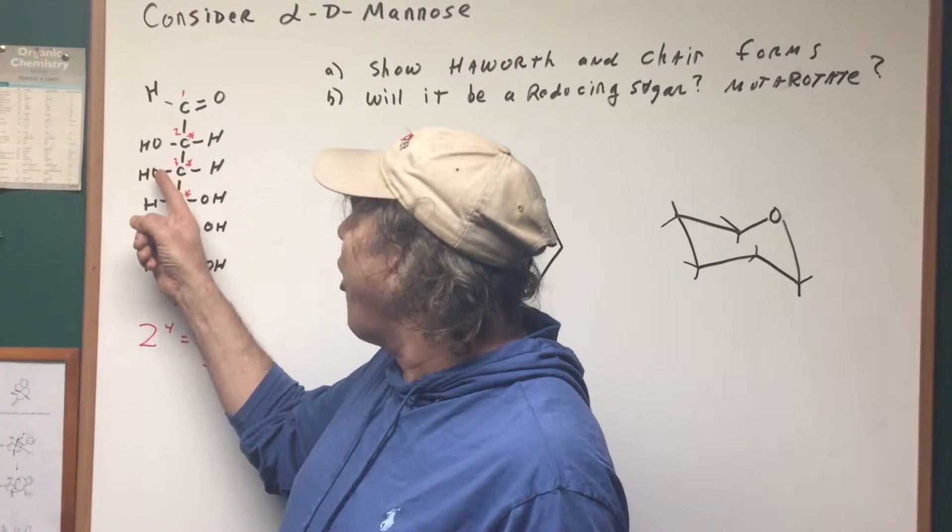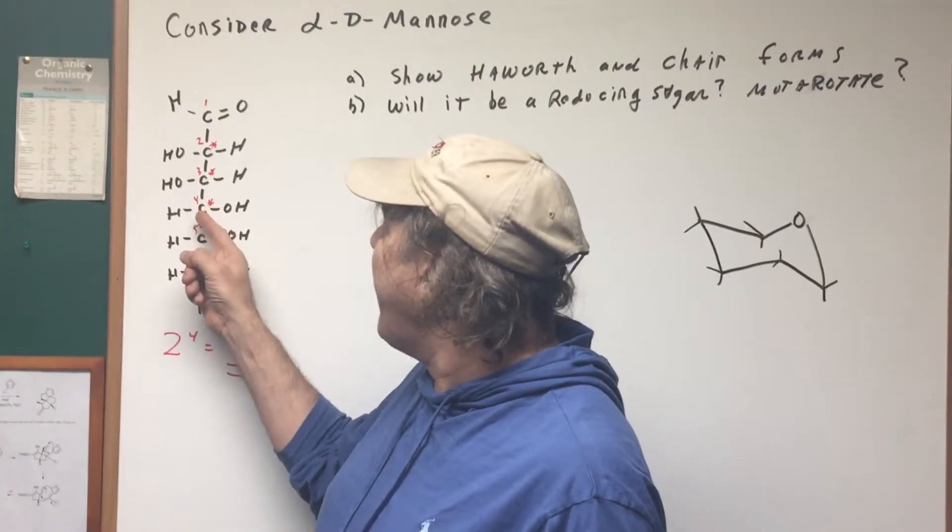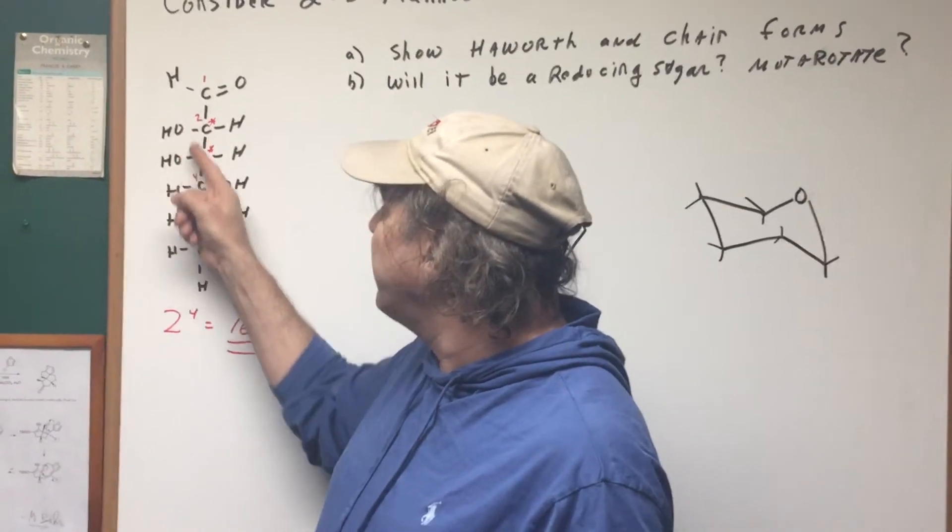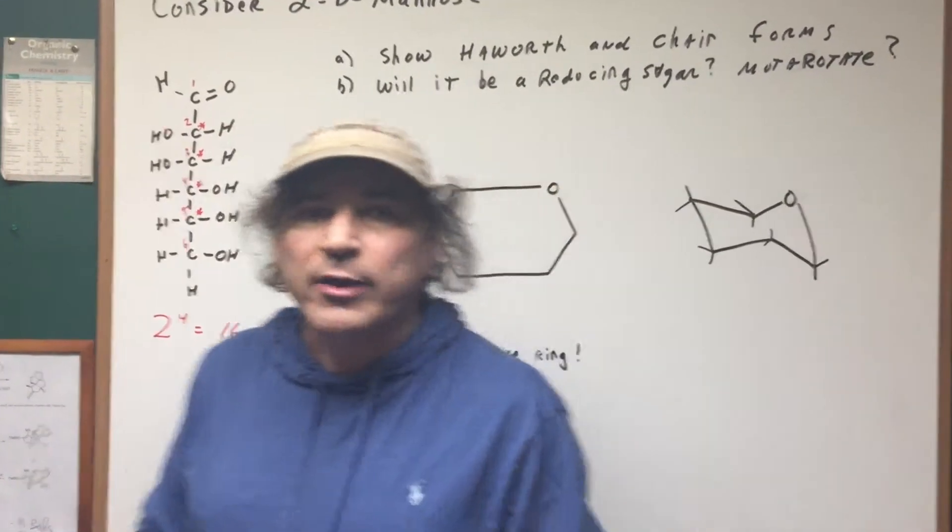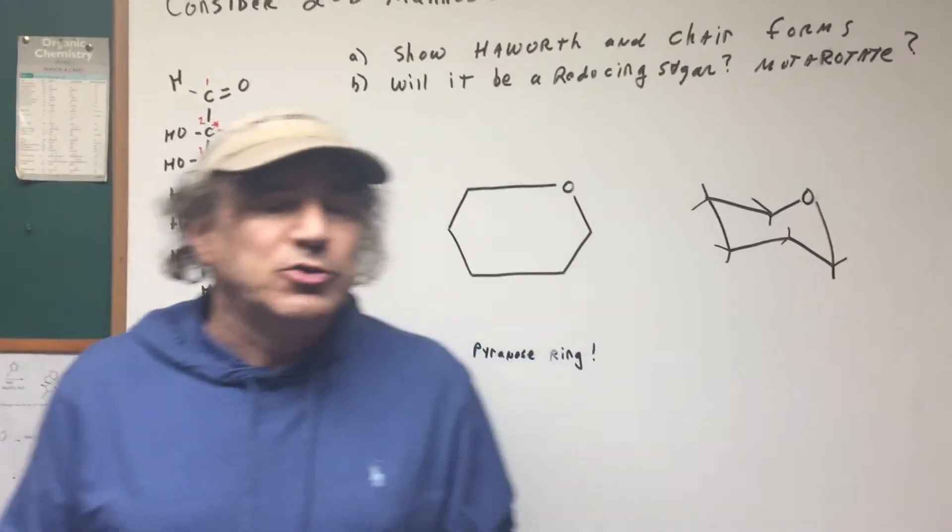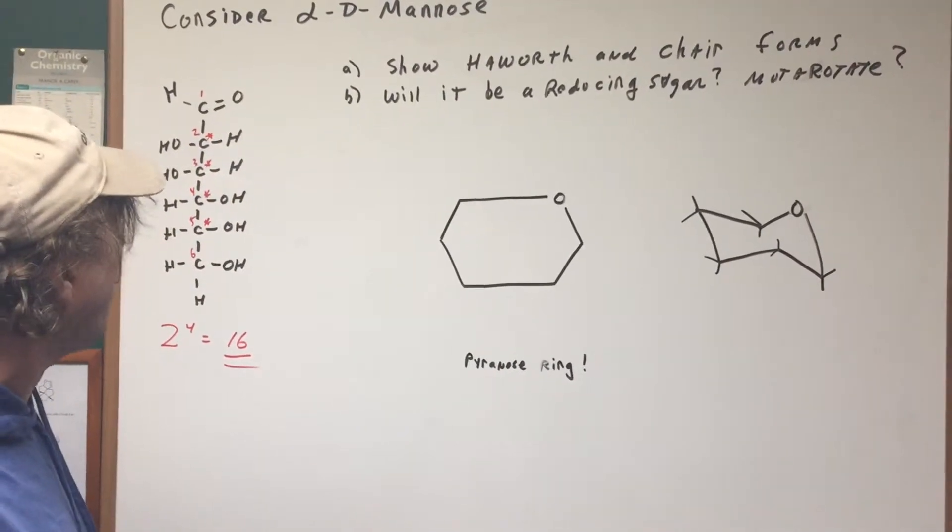For instance, if carbon-3 and carbon-4 ended up having the OH on the right side, on the left side, and this is on the opposite side, you would have what we call galactose. So as you can see, you can have different types of sugars. So there were 16 possible stereoisomers.